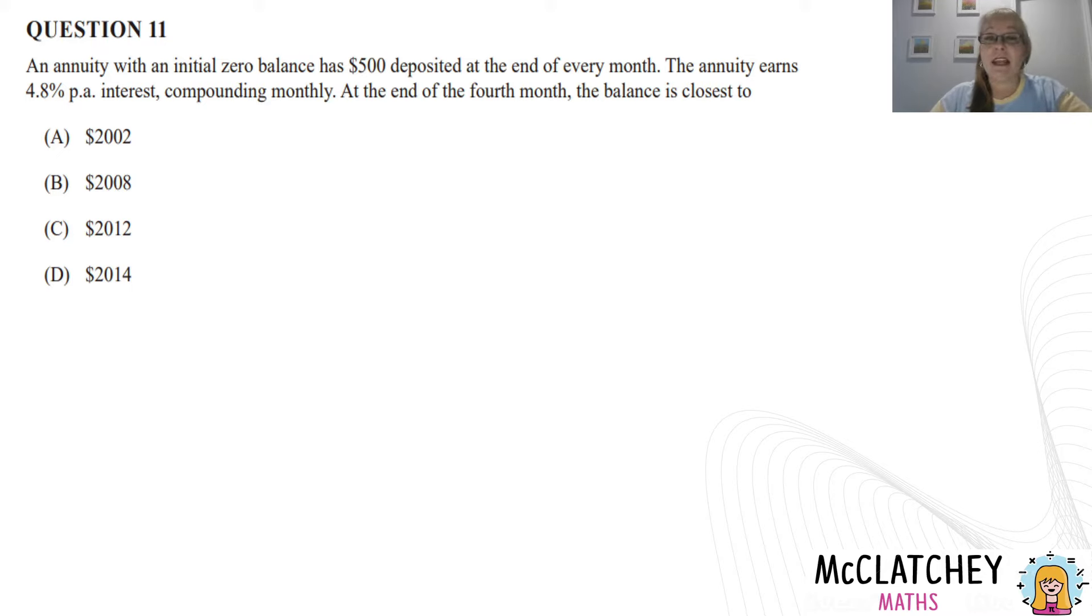So we're looking at question 11 and 12. Question 11 says, an annuity with an initial zero balance has $500 deposited at the end of every month. The annuity earns 4.8% per annum interest compounding monthly. At the end of the fourth month, the balance is closest to, and we've got four choices. So firstly, let's get our formula sheet out.